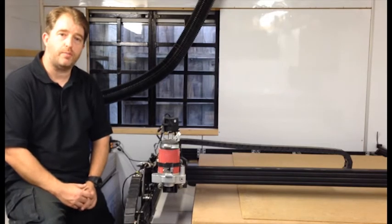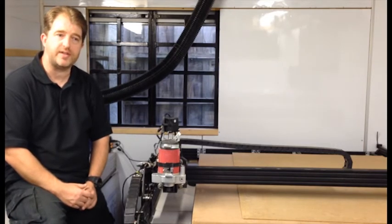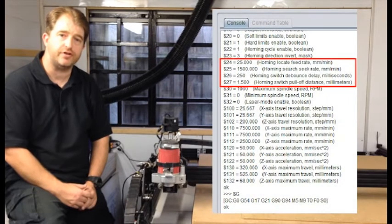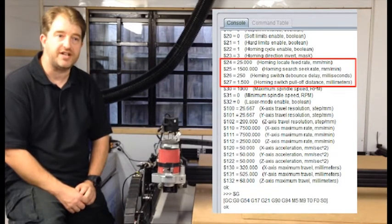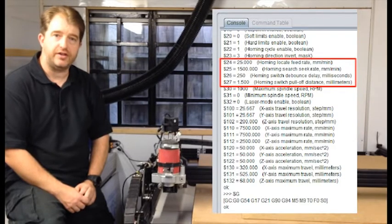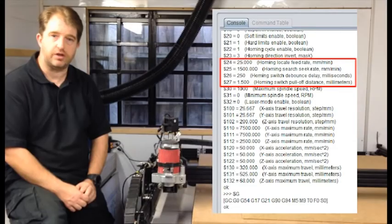There are some other homing settings, $24 up to $27. Now I've left them as set by GRBL; they seem to be working for me so why change them. The only thing that you will need to make sure you change is your invert mask which is $23.